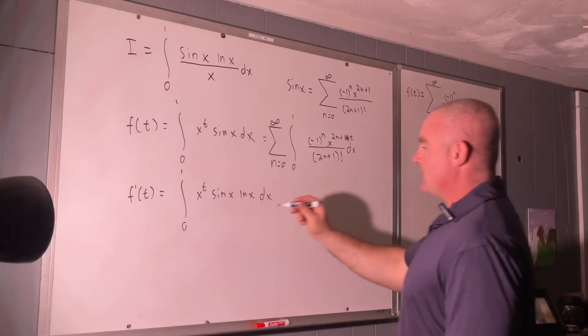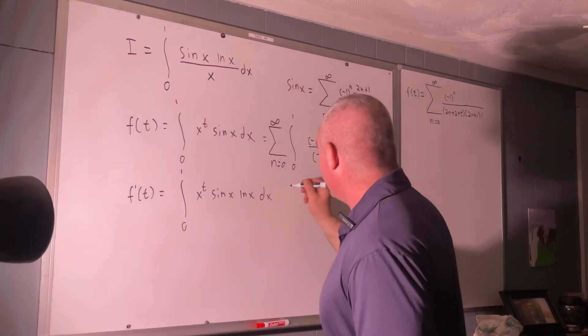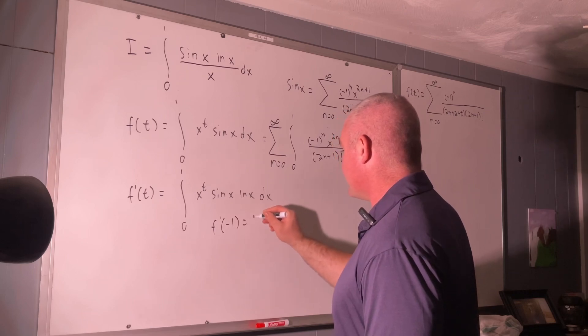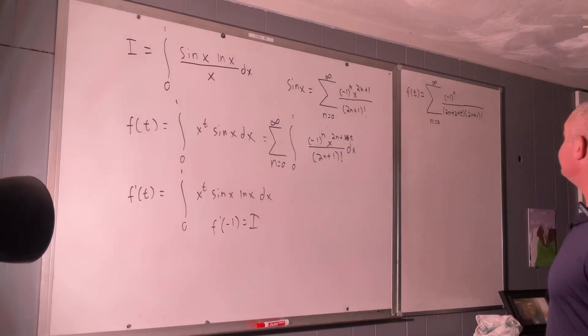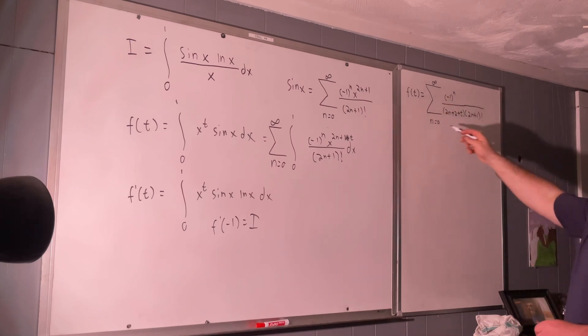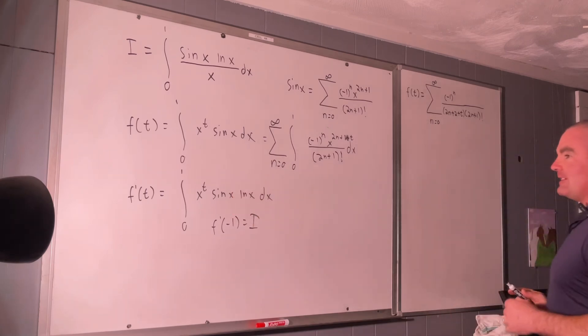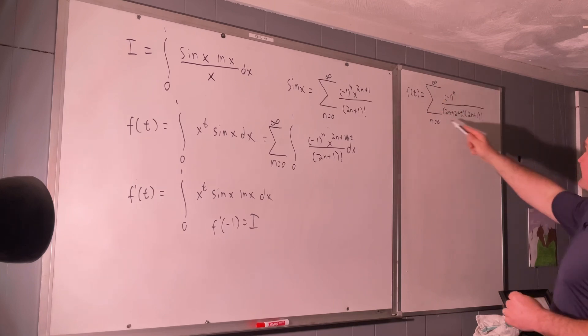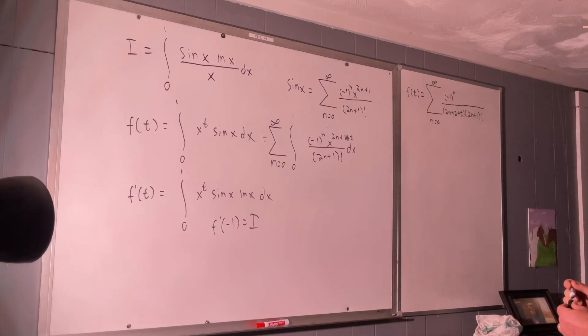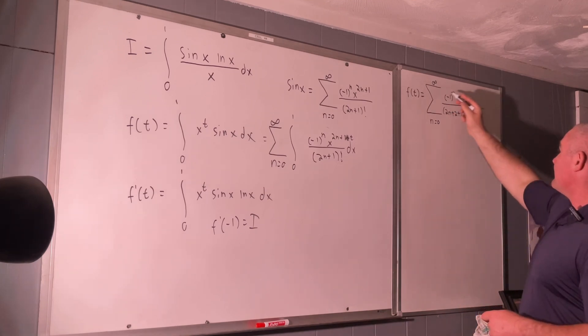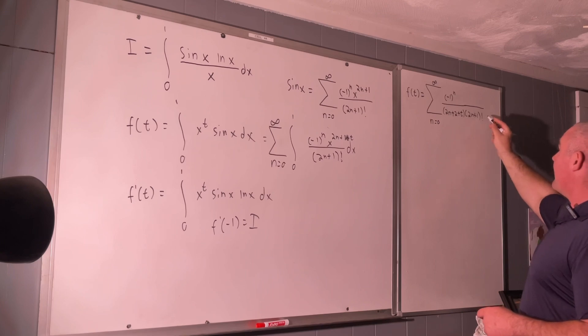And, I forgot to write that our f prime evaluated at negative 1 is going to give us back our original integral. Alright. Well, there's our f of t. But, we're going to be plugging values into f prime of t. So, since we have f of t expressed as a sum, we can easily find f prime of t expressed as a sum, just by taking a derivative with respect to t of whatever is inside our sum there.